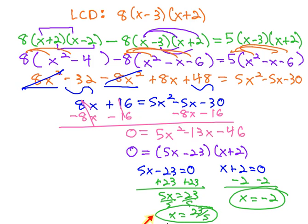Before we call these our final answers, we want to plug them into our LCD and make sure our denominator's not 0. Clearly, 23/5 won't give us 0. But notice, when we plug -2 into x+2, it does equal 0. This one does not count. We get the only solution: 23/5.